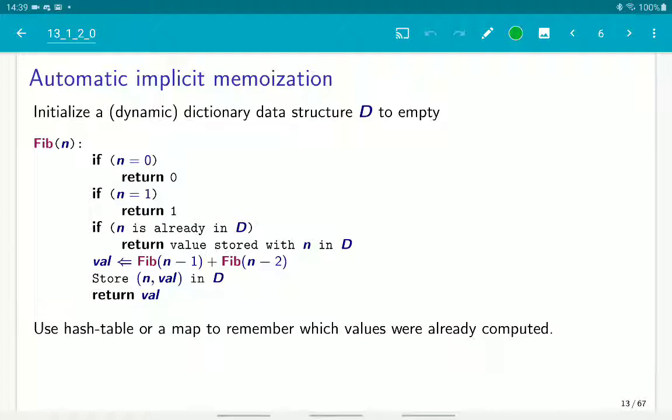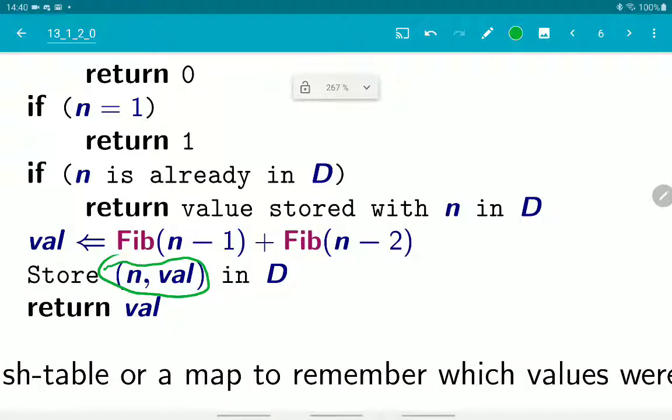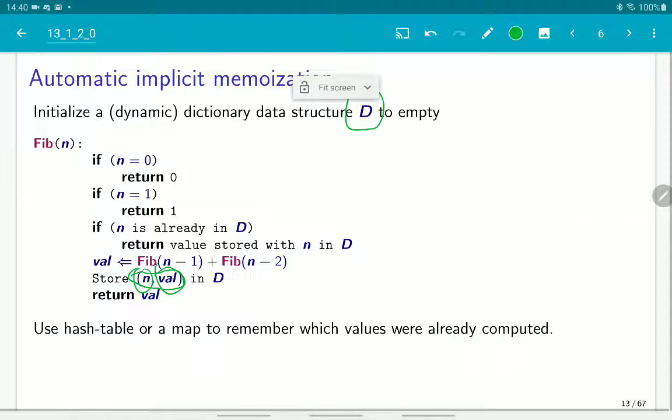The automatic implicit memoization works by using a map data structure or a dictionary data structure that stores pairs. The pair is one side of it is the value, the Fibonacci number that's been computed. N is the nth number, and then the value of this number.